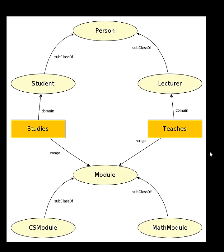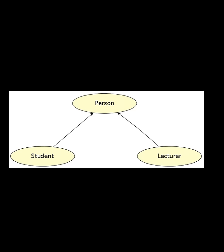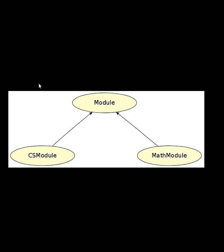If this graph looks confusing, let's simplify it and look at it this way. From class Person, we have subclasses Lecturer and Student. From class Module, we have subclasses Math Module and CS Module.